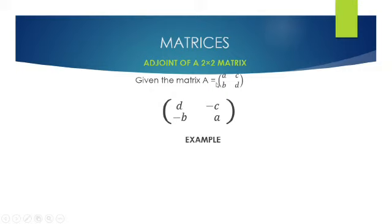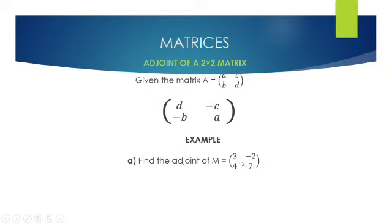Let's look at an example with actual numbers. Find the adjoint of M, which is equal to that matrix. We simply switch the positions of 7 and 3, and change the signs of 4 and minus 2. Hence the adjoint of M will be this matrix.